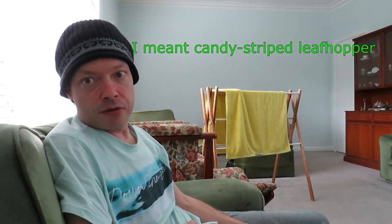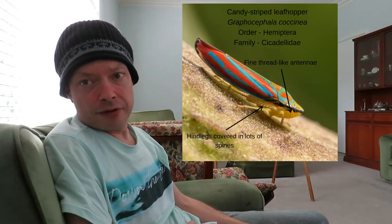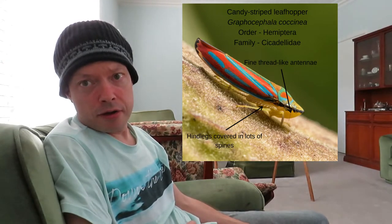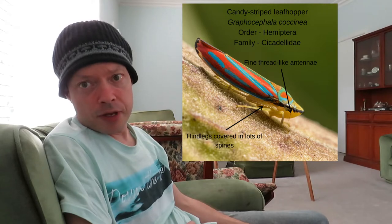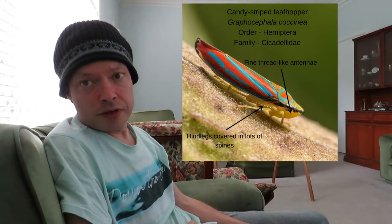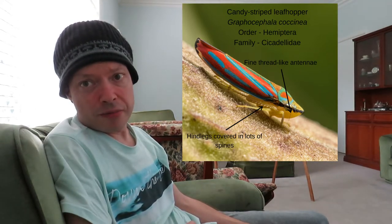This bug has these red and blue stripes, and you have a yellow on the head and yellow on the underside, and you have these fine antennae which are like a thin thread.